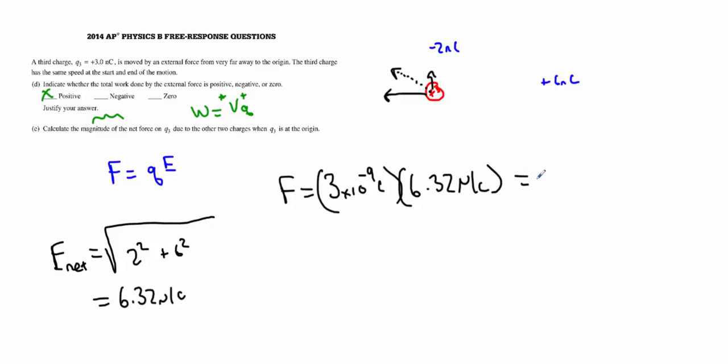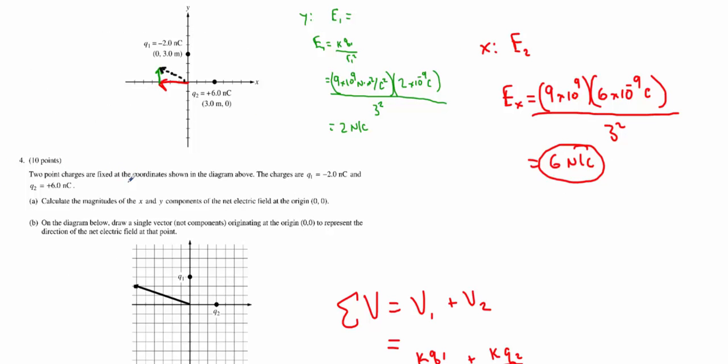To give my overall net force at that spot, you're going to get 1.9 times 10 to the negative 8 Newtons. That's it for number 4 from the 2014 AP Physics B exam.